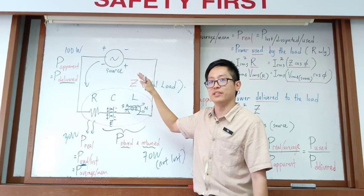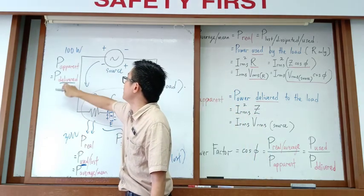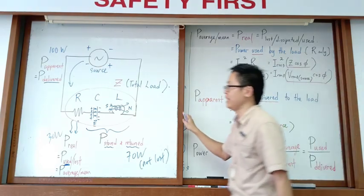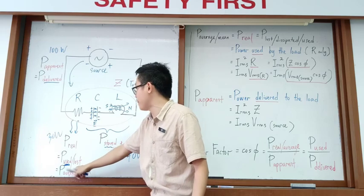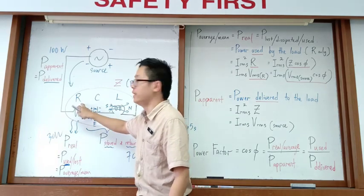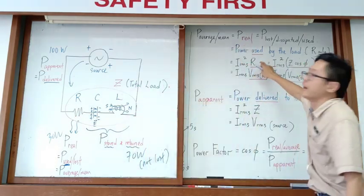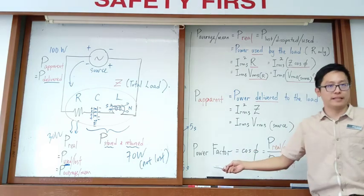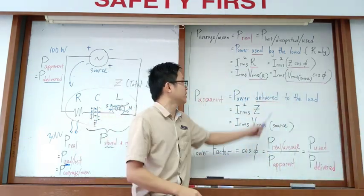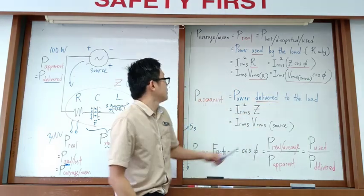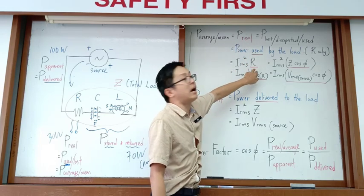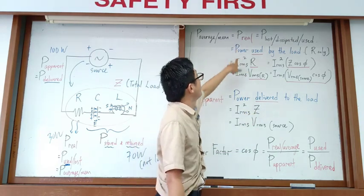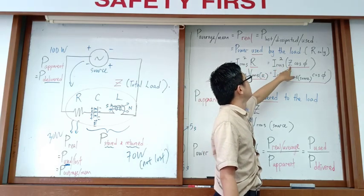Power factor is cos φ. Real power equals I²rms · R, which can also be written as I²rms · Z · cos φ. Apparent power equals I²rms · Z. So real power divided by apparent power gives cos φ — which is the power factor.